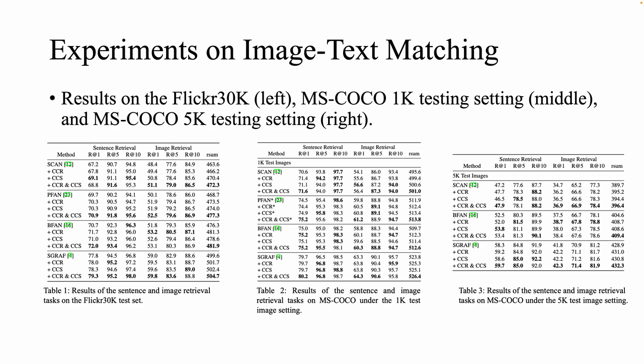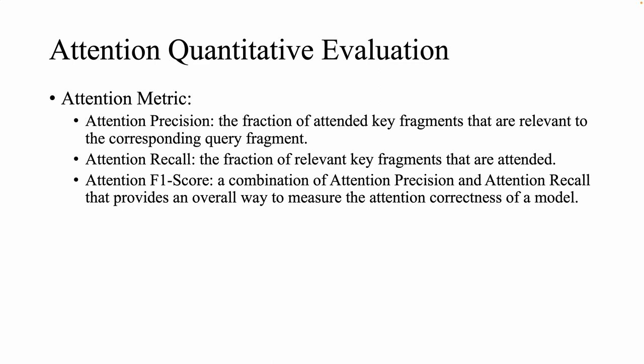We find that when CCR and CCS are used separately, they both achieve consistent performance improvements on all baselines and tasks. More importantly, all models achieve the best improvements when we apply both constraints. These results show the strong generality of our methods for different models and datasets.